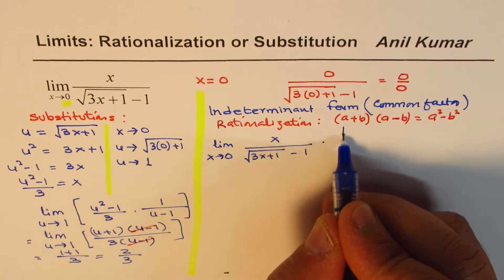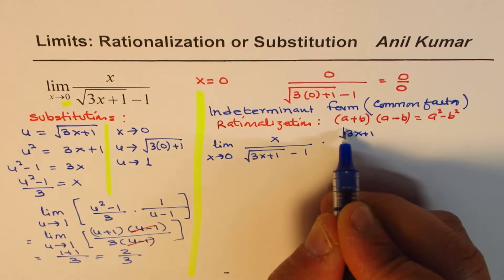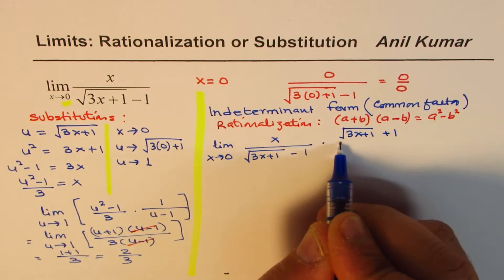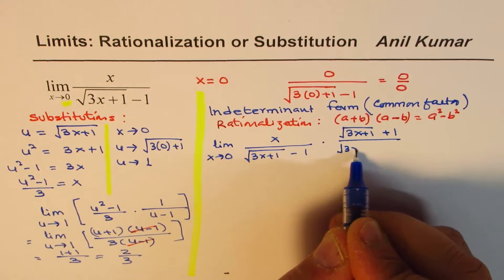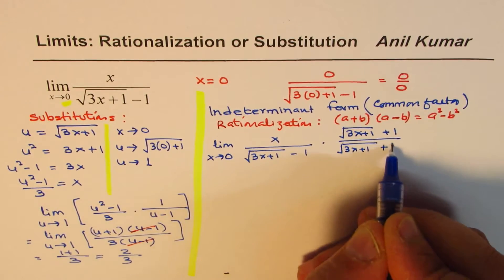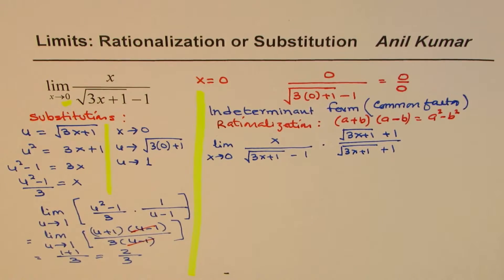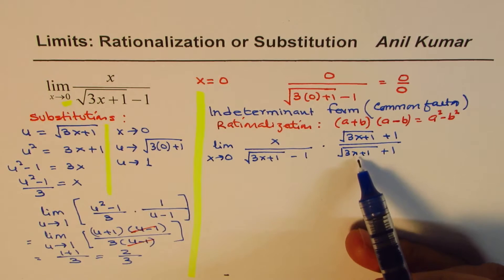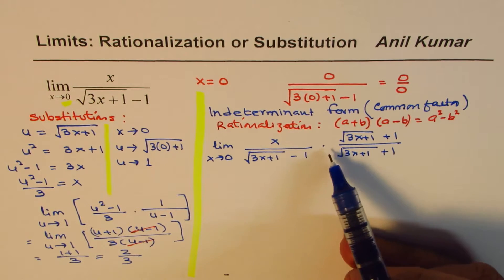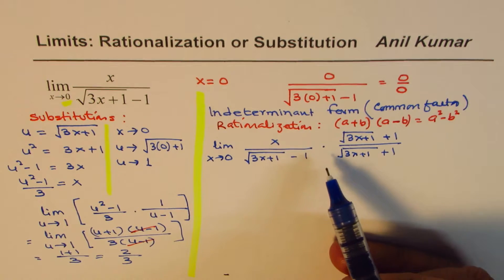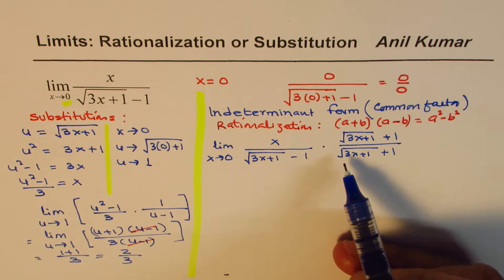So let's rewrite this limit as limit x approaches 0 and what we have here is x divided by square root 3x plus 1 minus 1 times. Now what is conjugate of this? We have to change this sign. So we have square root of 3x plus 1 plus 1 divided by square root of 3x plus 1 plus 1. Effectively you are multiplying and dividing by the same factor, that is multiplying by 1. So you are not really changing your function.